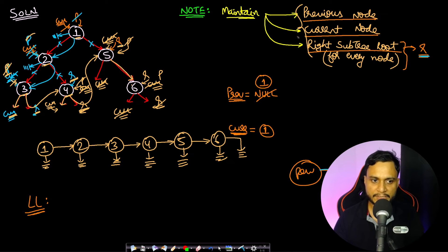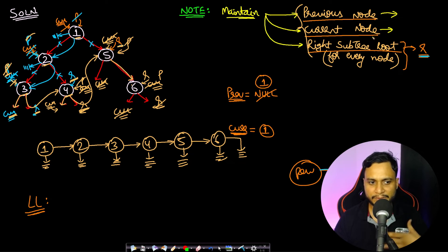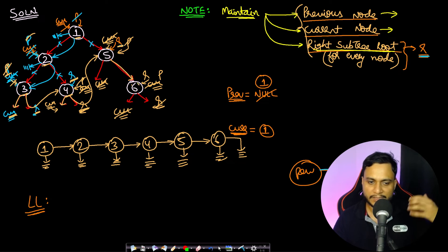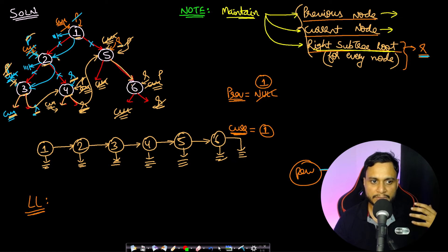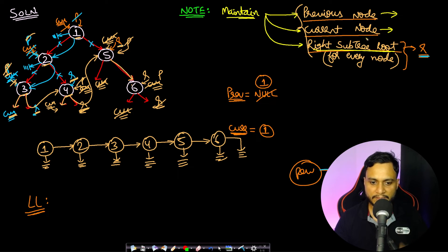These three variables — previous, current, and right subtree root — helped produce the single linked list in pre-order traversal. Previous links all nodes in pre-order; current tells us which node we are at; and right subtree root saves the right child so that when we go into the left subtree and the right pointer gets changed, we can still process the right subtree after returning from recursion.